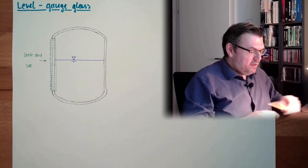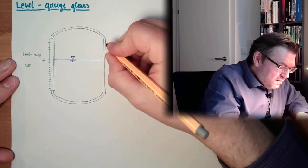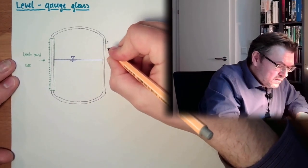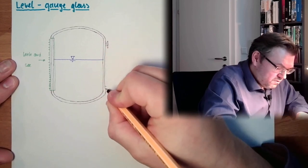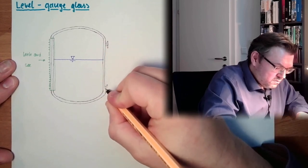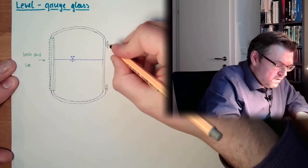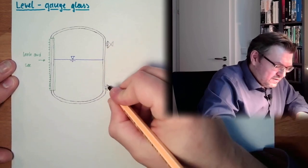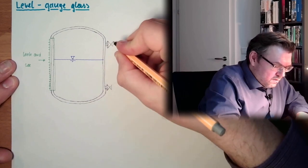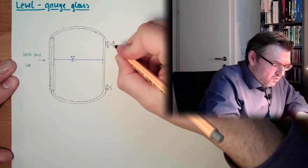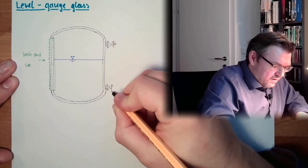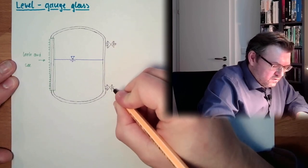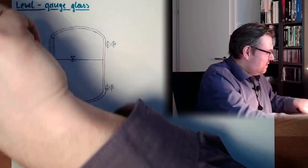There might also be the possibility to mount it here, to have here some sort of flange, also here some sort of flange. Then you usually make here a valve inside, and then you mount the gauge glass on the other side of the flange, then you have here this gauge glass.